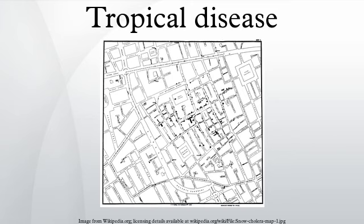Insects such as mosquitoes and flies are by far the most common disease carrier, or vector. These insects may carry a parasite, bacterium, or virus that is infectious to humans and animals. Most often disease is transmitted by an insect bite, which causes transmission of the infectious agent through subcutaneous blood exchange.